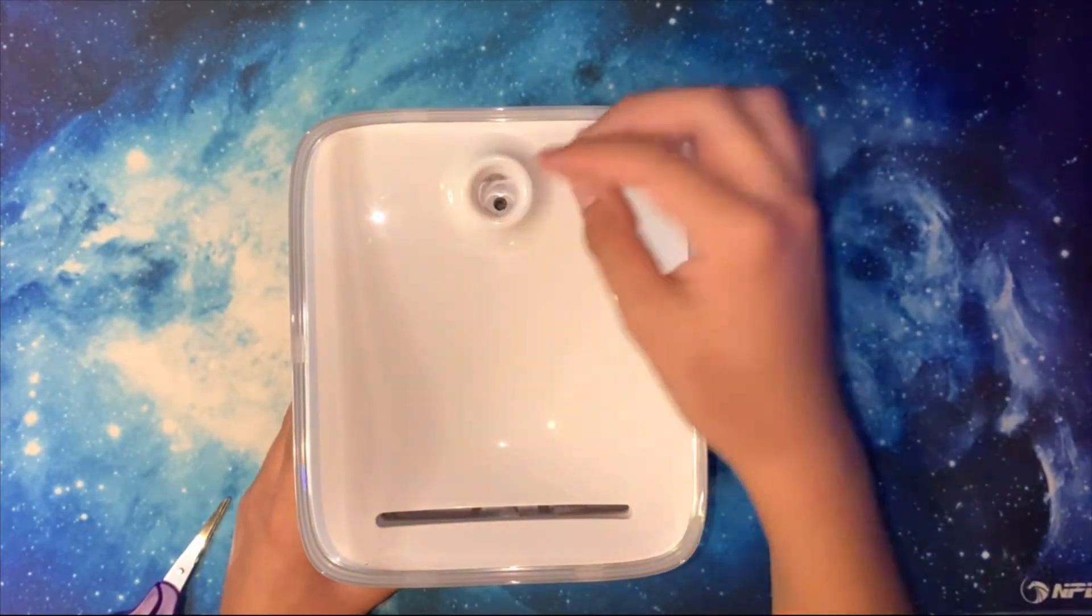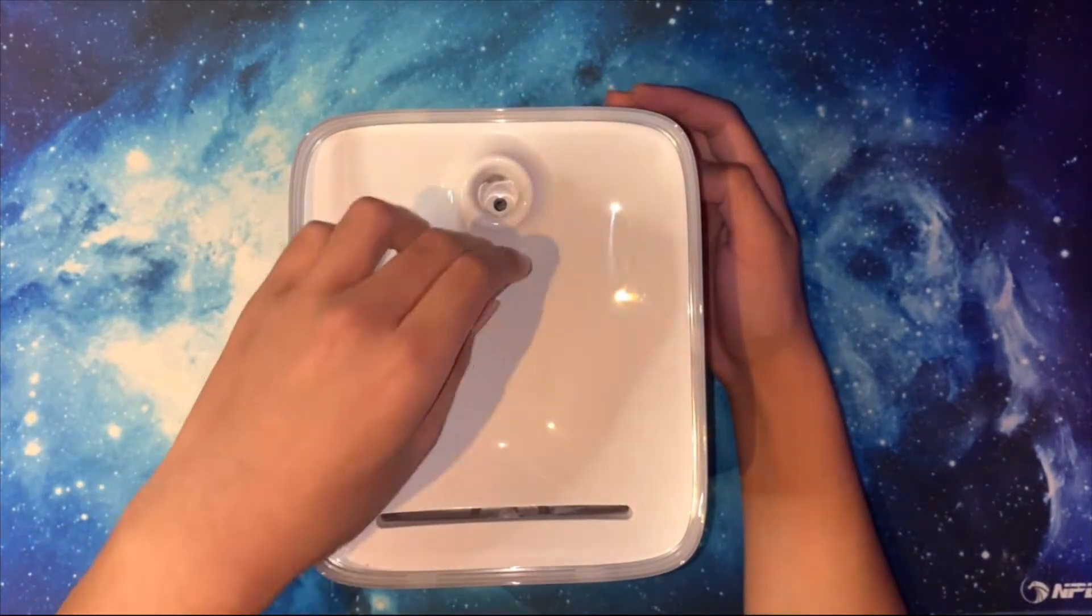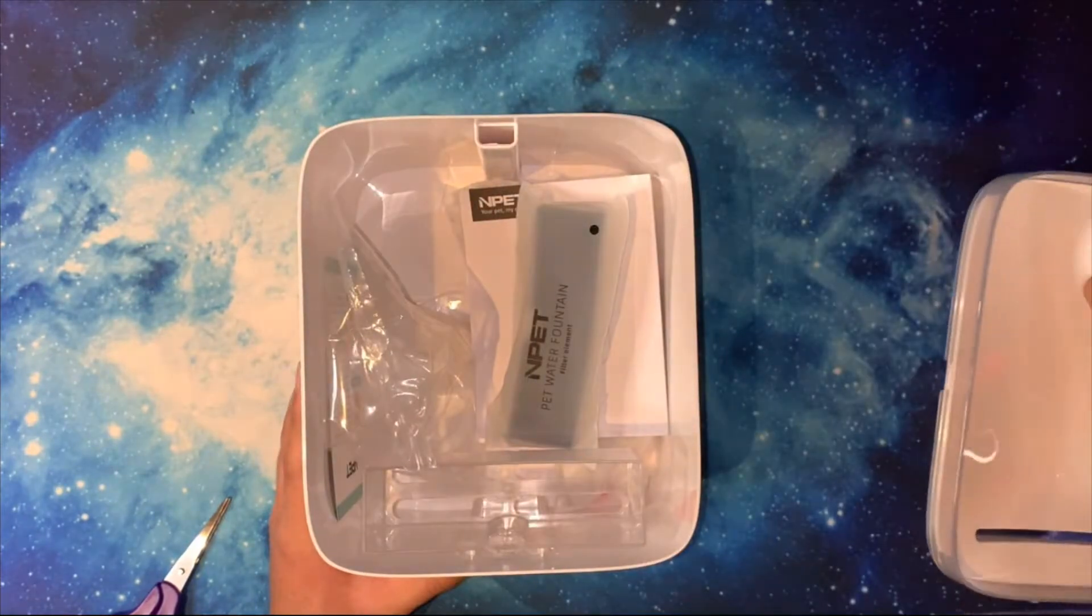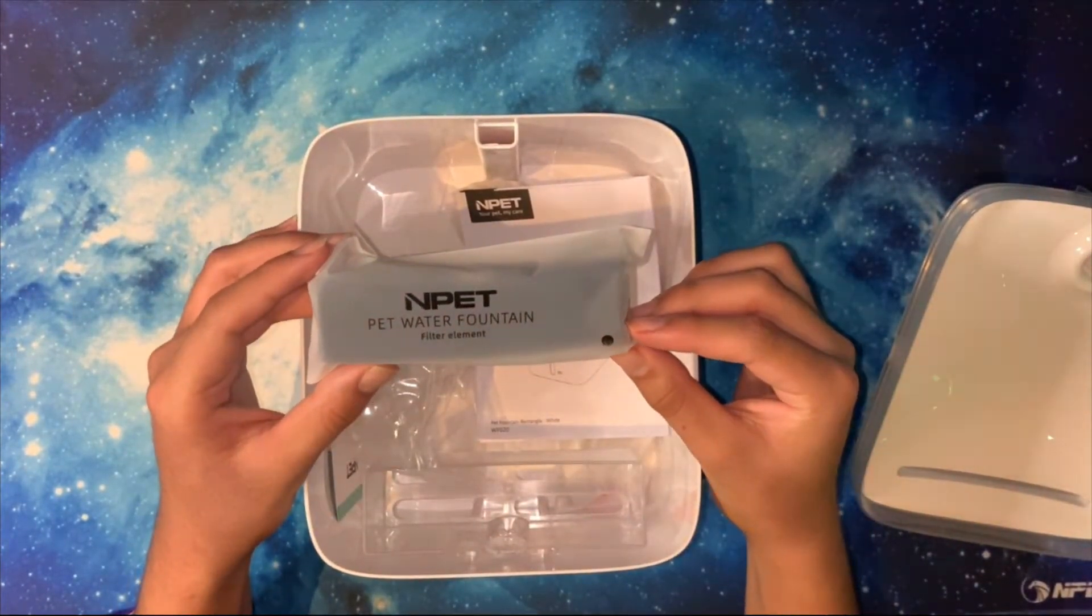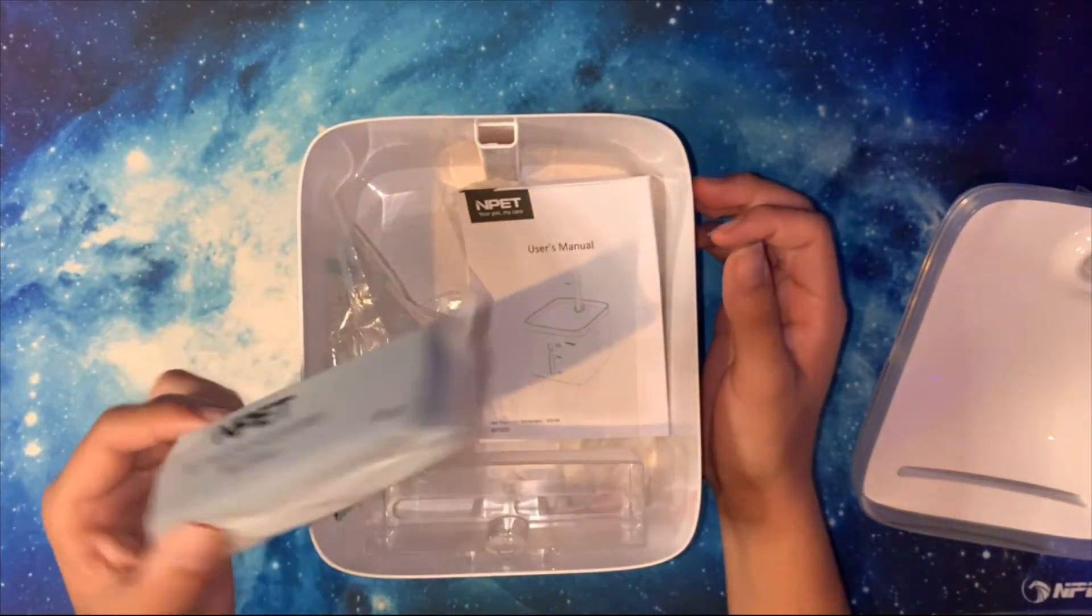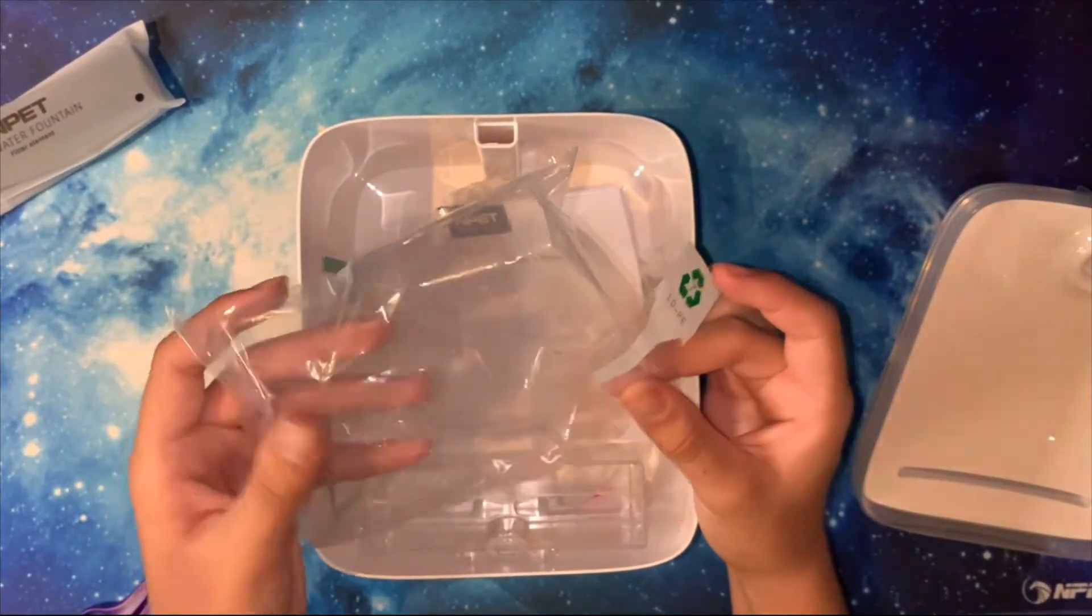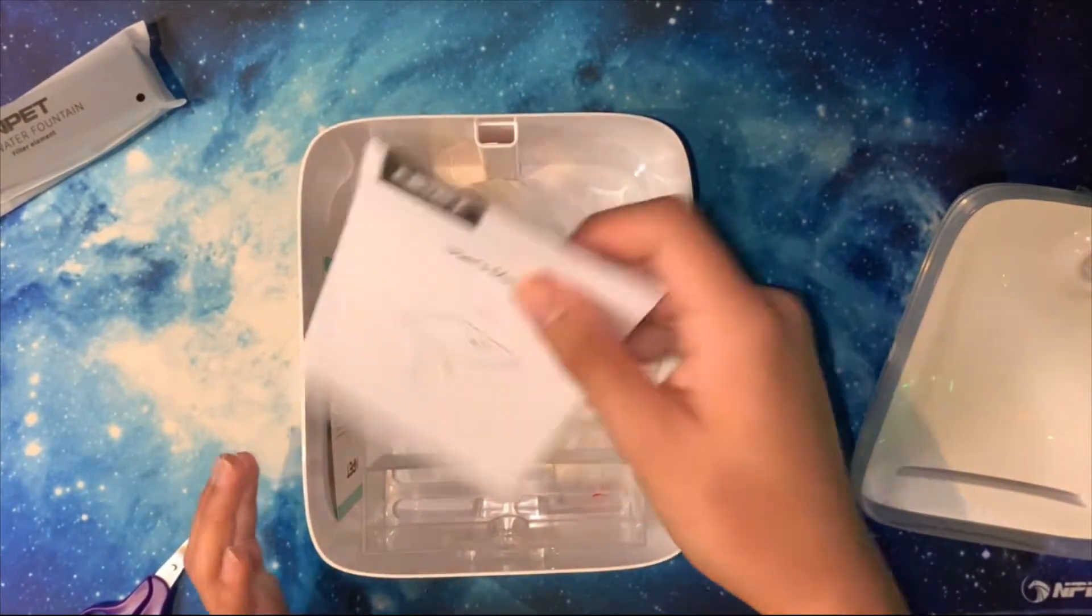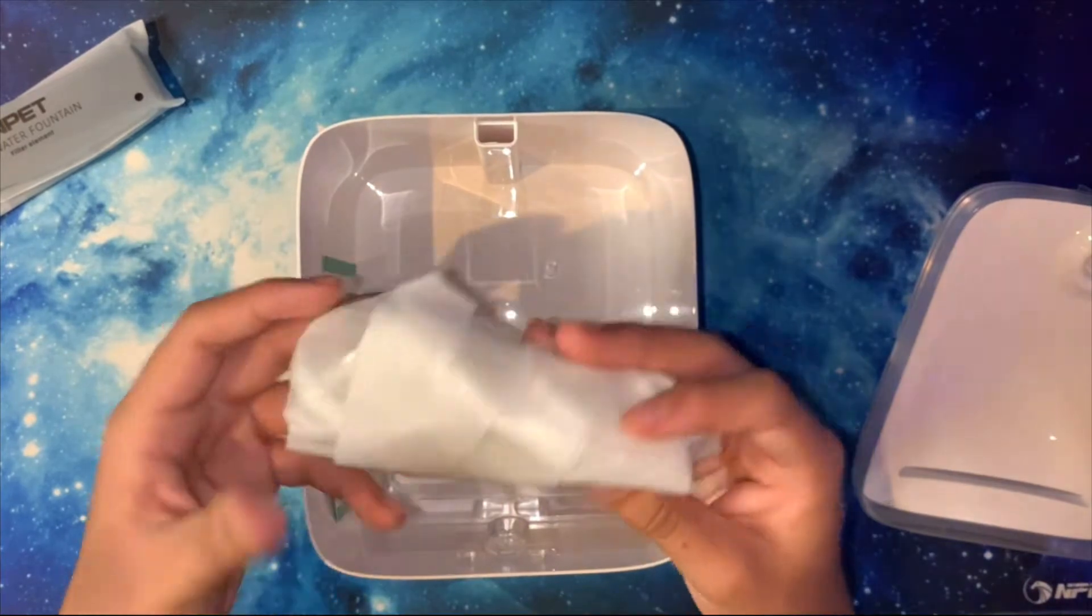Now what is this? I believe that's for fountain mode, and here is the water flow where it comes down. I believe that's how it works. I've never tried one of these guys, first time literally. Here we have an NPET pet water fountain filter element, so this is the filter. I believe this cleans the water, and a hair bag. Okay, nice.